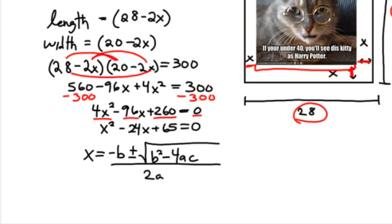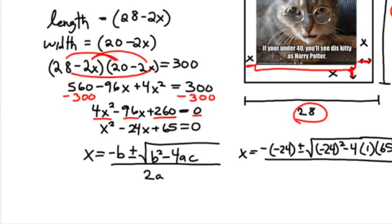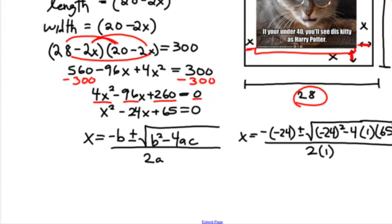Now let me plug in my values. x equals negative (-24), which is going to be a positive 24, plus or minus the square root of (-24)² minus 4 times 1 times 65, all over 2a, which is 2 times 1. See? I told you a isn't always 4.